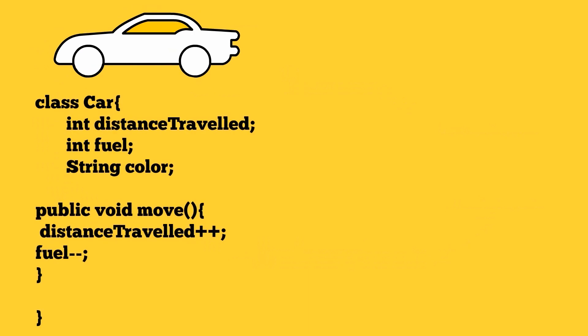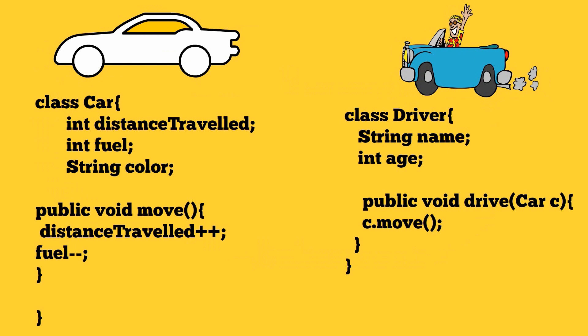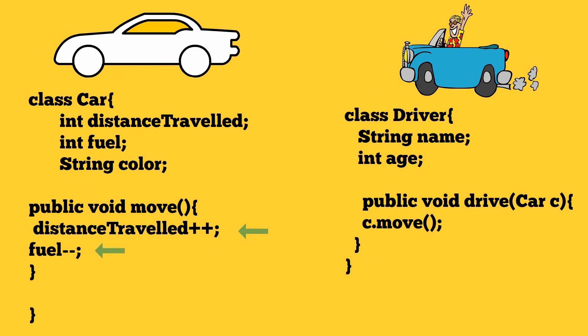For example take a car type which has distance traveled, fuel and color as states and move as its behavior. Then take this driver type who has state as name, age etc and then drive as its behavior. The drive method invokes the car's move method and move method in turn modifies the states like distance traveled, fuel, etc. From this we can understand that it's easy to simulate or represent real world with object-oriented approach.